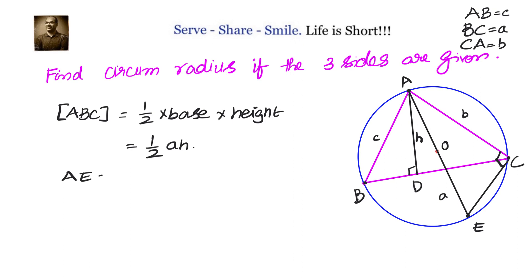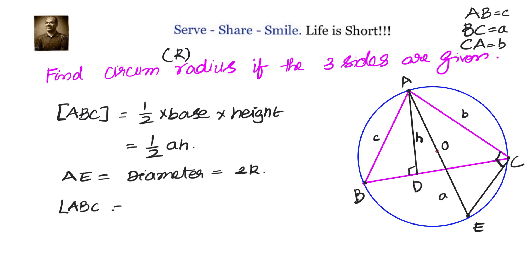Looking at arc AC, the angle subtended by arc AC at point B equals the angle subtended by arc AC at point E, because angles in the same segment are equal. So angle ABD equals angle AEC.